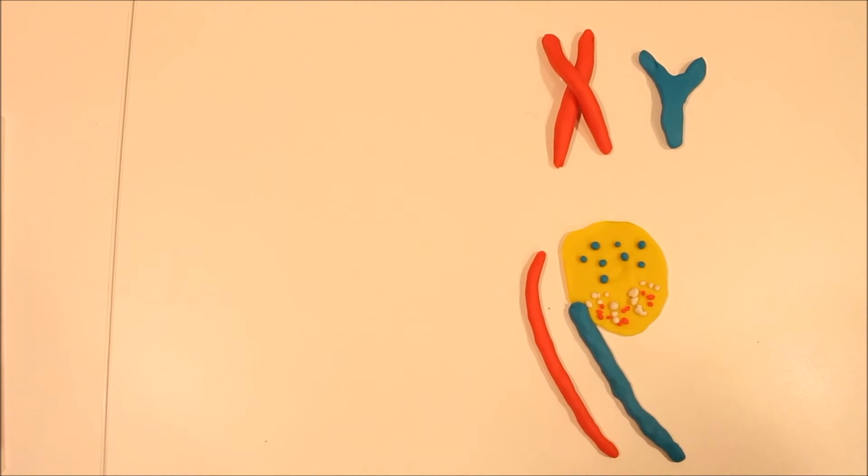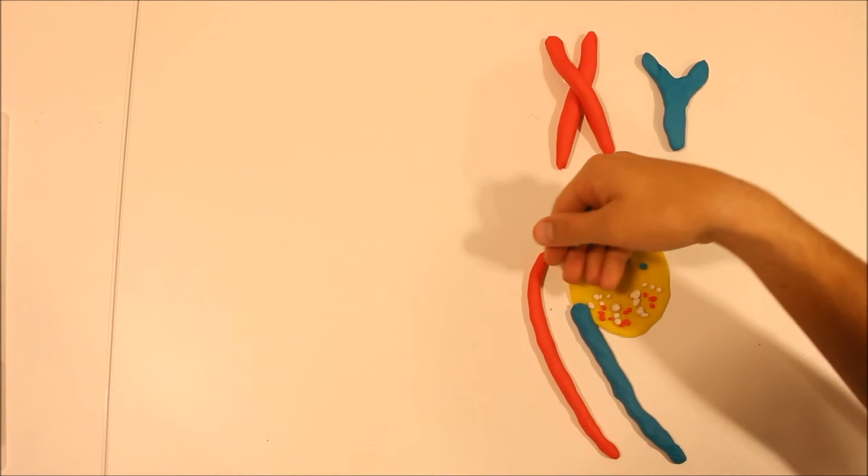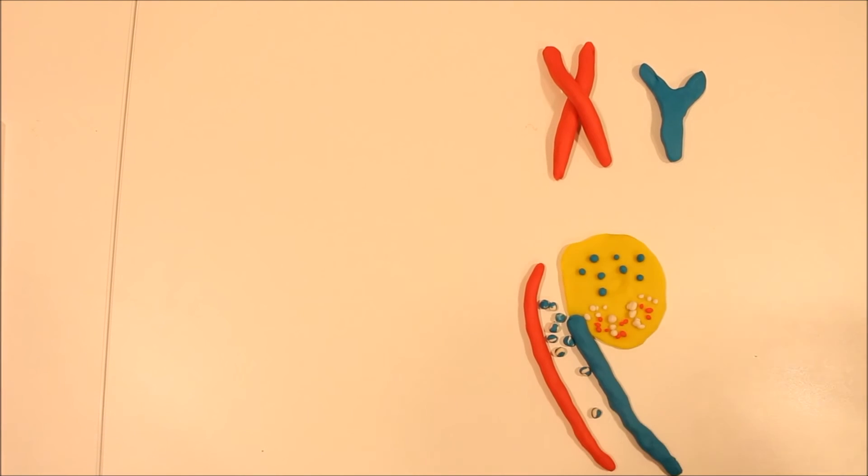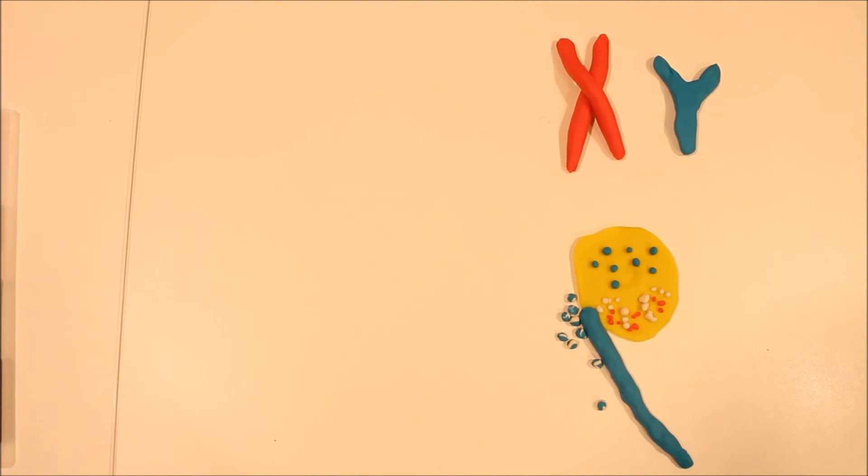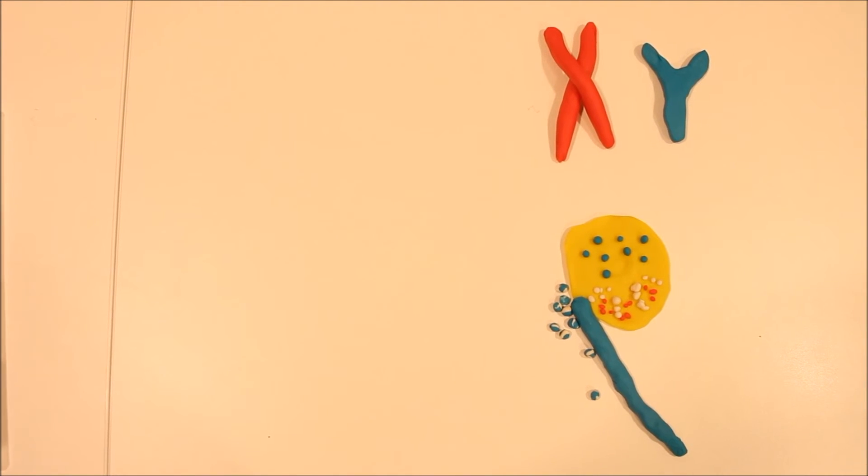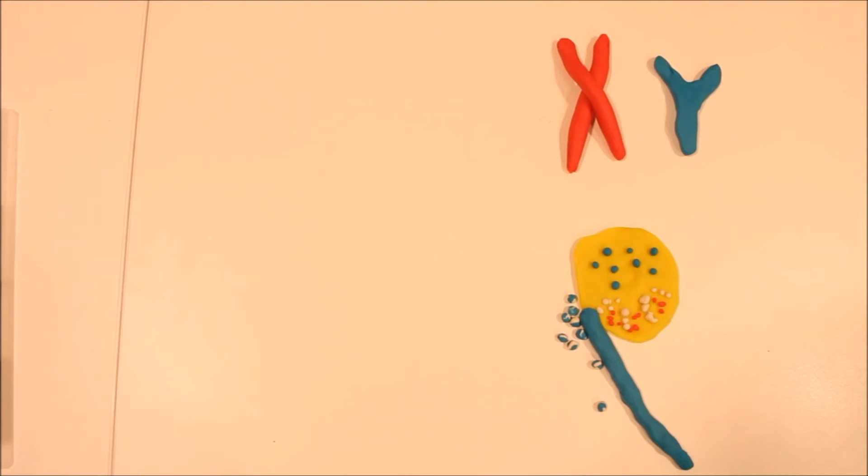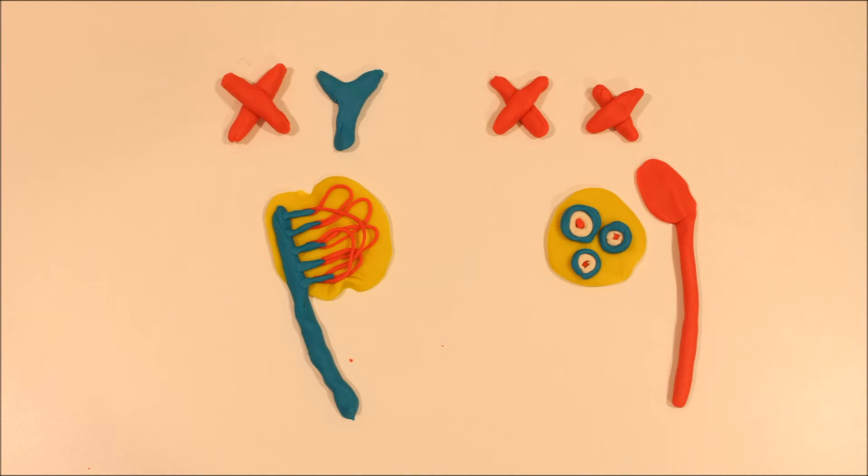During further development of the male reproductive system, the Sertoli cells start secreting anti-Müllerian hormone, which causes the Müllerian duct to degrade. At the same time, testosterone from the Leydig cells stimulates further development of the Wolffian duct.